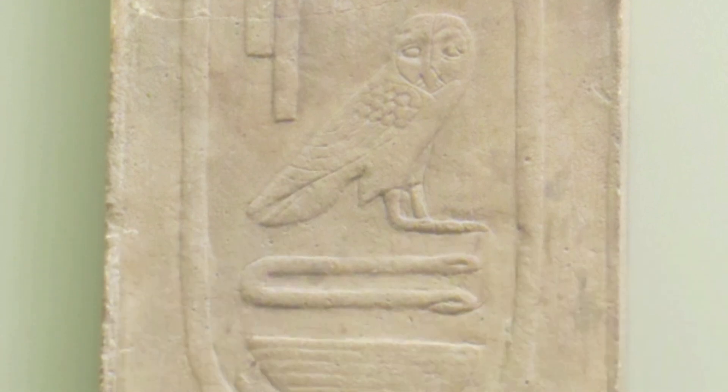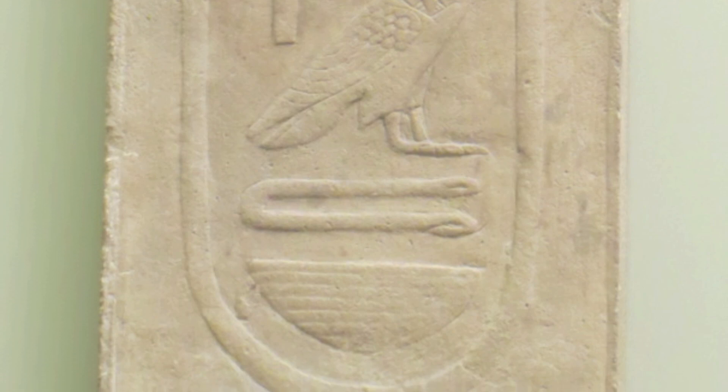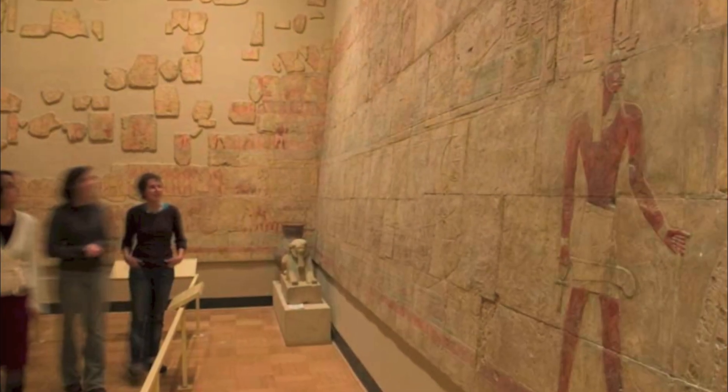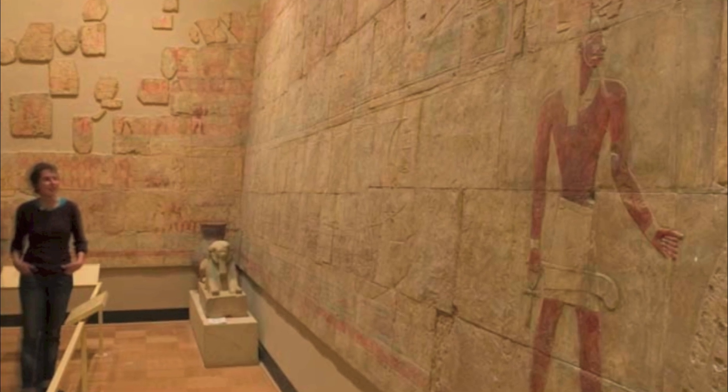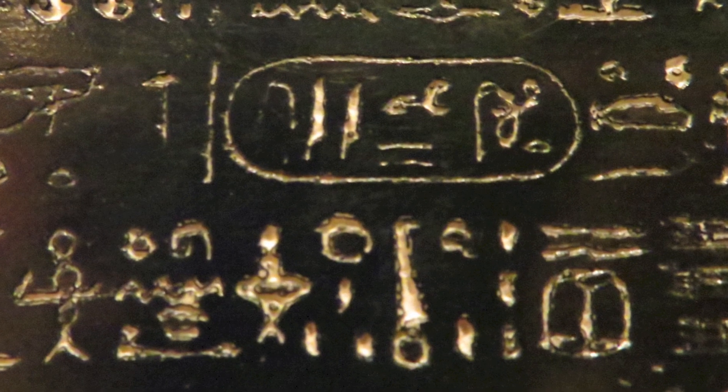However, hieroglyphs do not represent letters so much as sounds. When writing their names, Egyptians could sometimes take shortcuts and write the symbols for gods or common words, but when writing the names of foreigners, they would have to sound the names out.